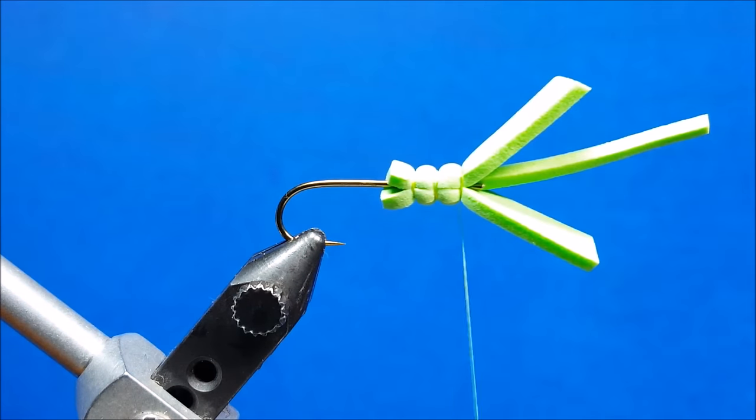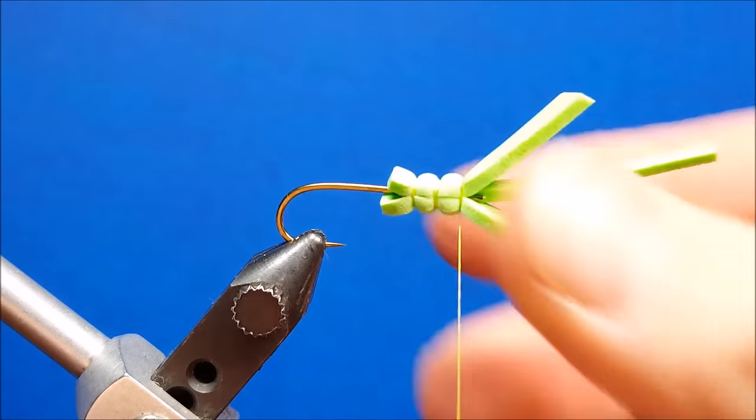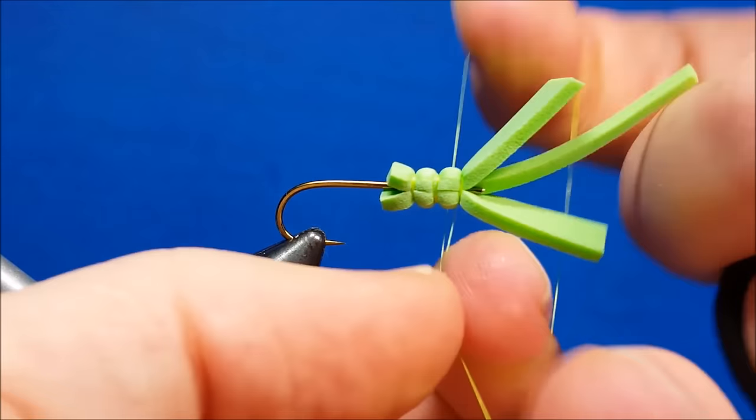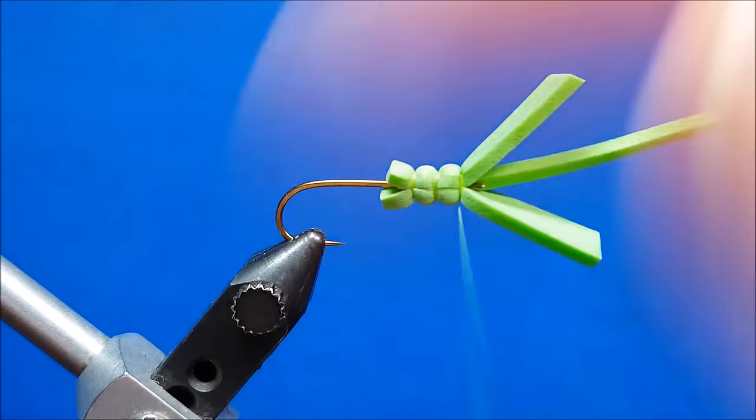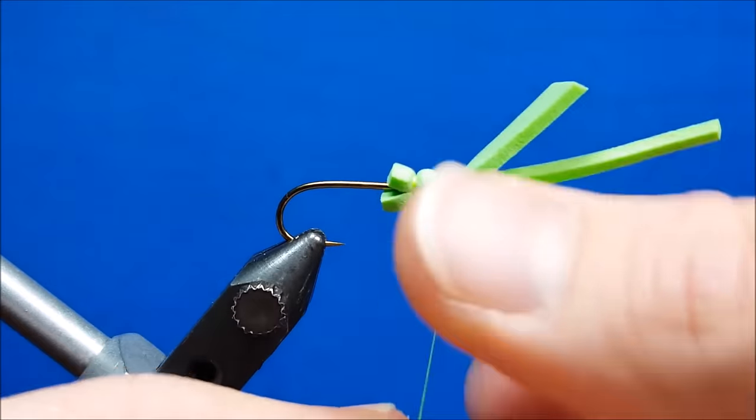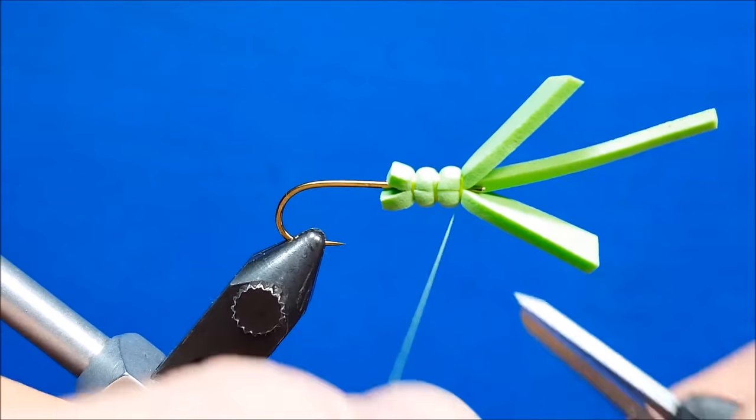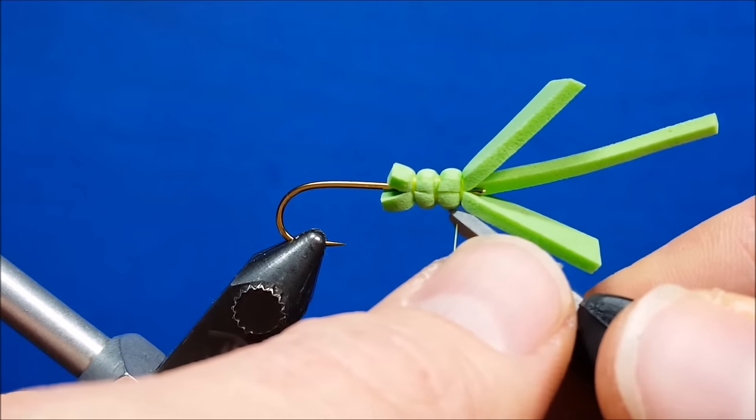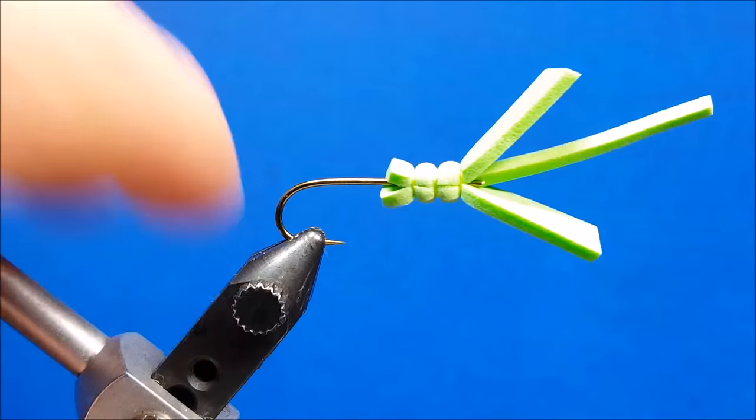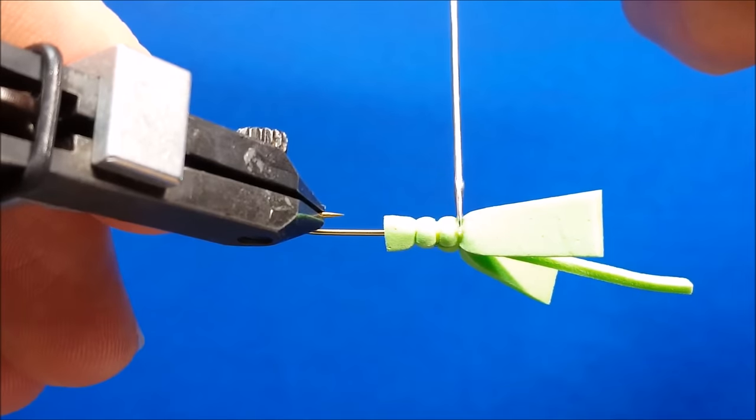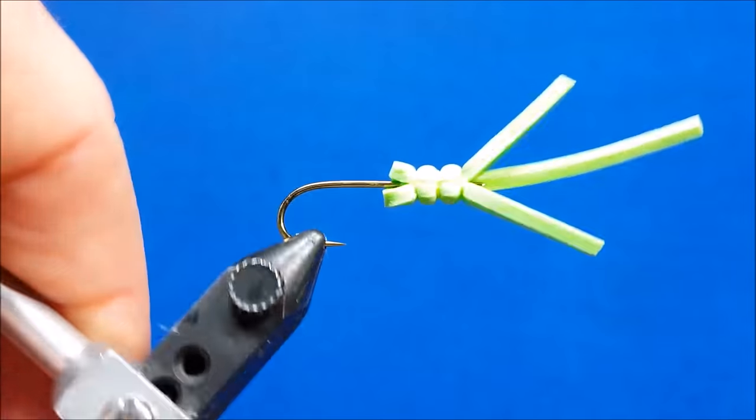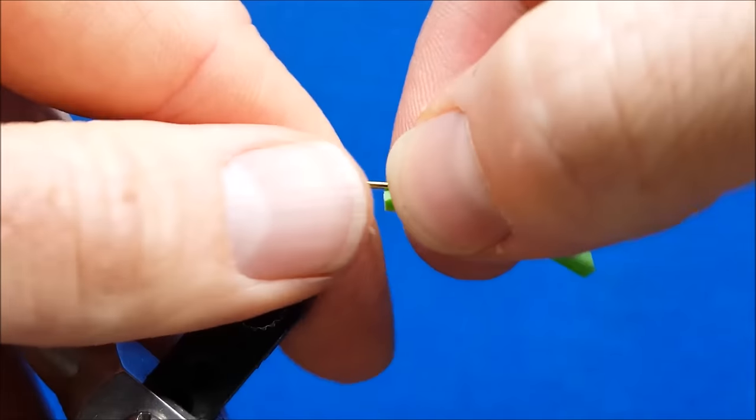This is what it looks like here, this is what we're left with. I'm going to half-hitch this just a couple times, snip that thread, and come in with a little bit of zap-a-gap where I snipped it. Hit that so that stays in place.